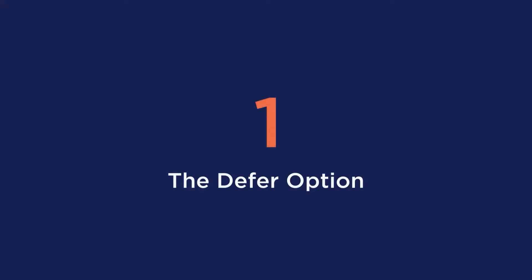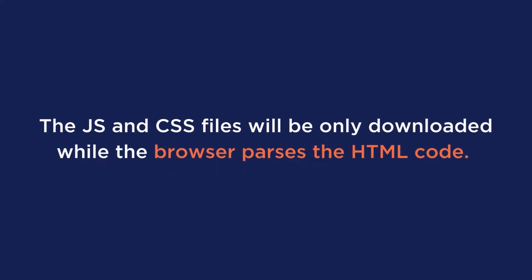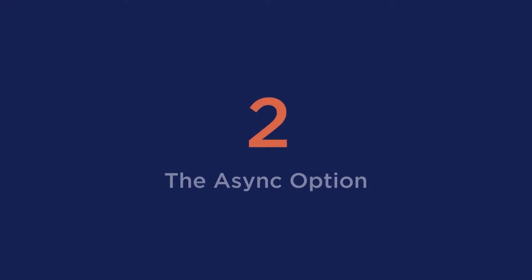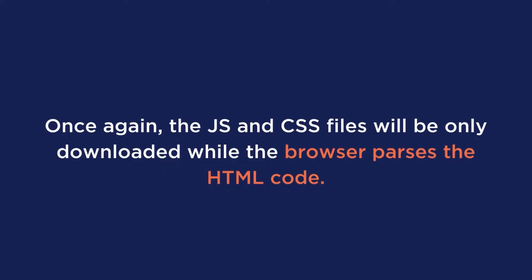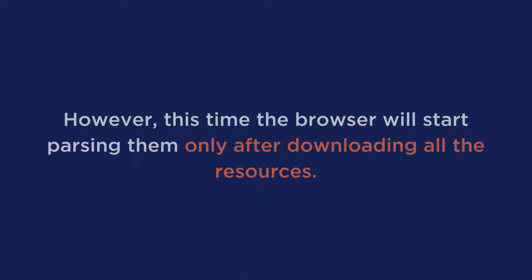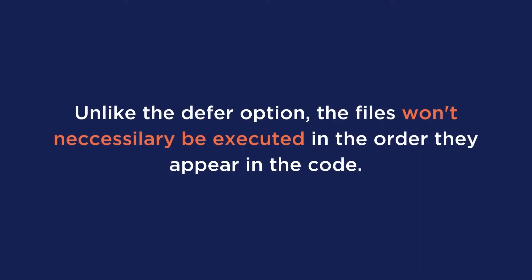Now, once you know your render blocking resources, there are two main ways to go about it. First is the defer option. This means the JavaScript and CSS files will only be downloaded while the browser parses the HTML code, and the browser will parse them only after the HTML parsing is finished. Please note that the browser will execute the files in the exact order they appear in the code. Second is the async option. The JavaScript and CSS files will only be downloaded while the browser parses the HTML code. However, the browser will start parsing them only after downloading all the resources, which means the HTML parsing could still be going on. And unlike the defer option, the files won't necessarily be executed in the order they appear in the code.